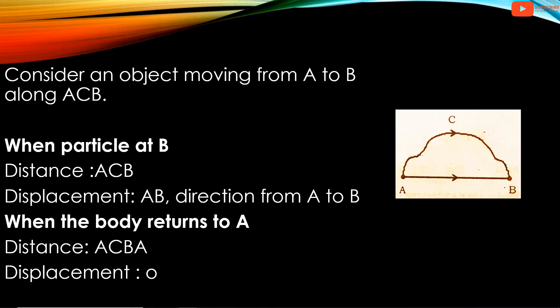Direction is from A to B. When the body returns to A, the distance traveled is ACB, but the displacement is 0. That is, when the final point and initial point are the same, displacement becomes 0.